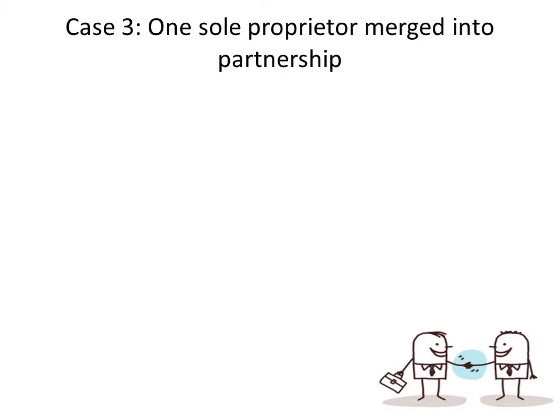Case 3 is one sole proprietor merged into the partnership. A partnership can be created in several ways: case 1, both partners contribute money; case 2, partners contribute cash and properties — always valued at fair market value, including current valuation, can be sold in the market, or currently appraised. It could also be one sole proprietor contributing their business and another contributing money, or two sole proprietors combining their businesses to form a partnership.